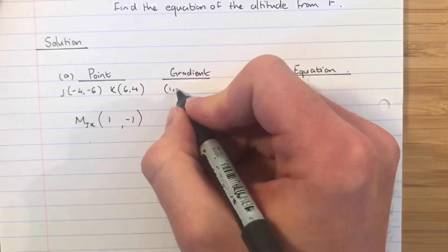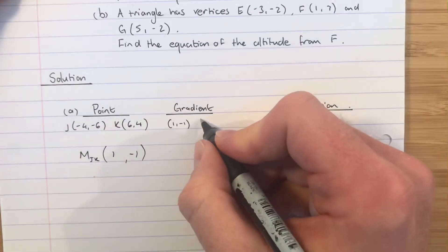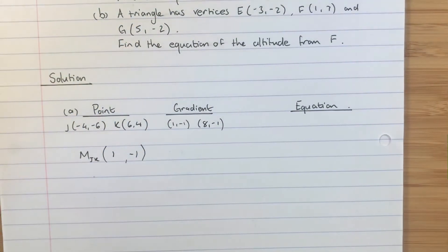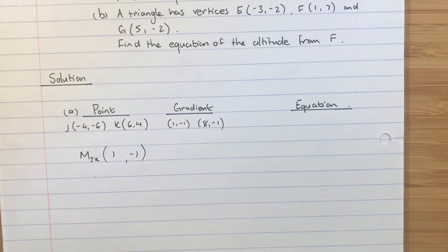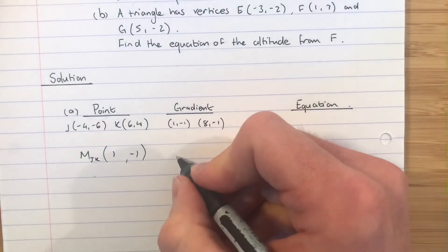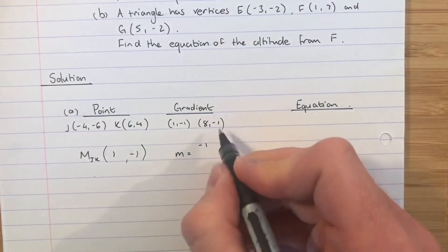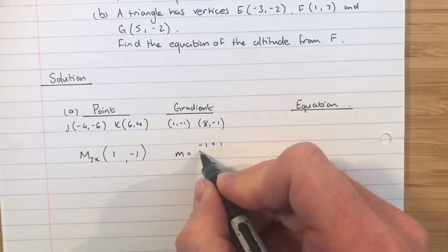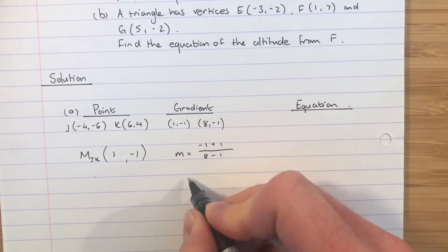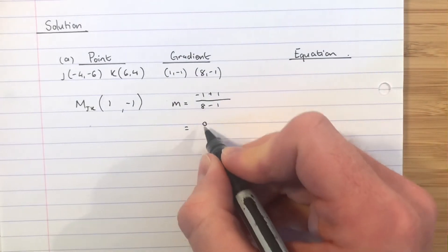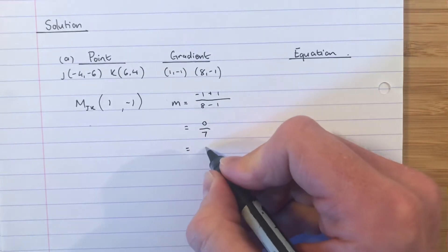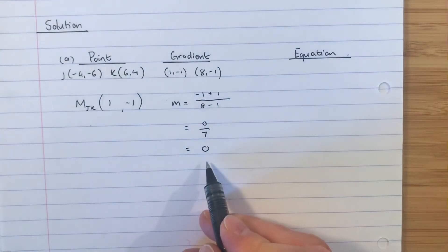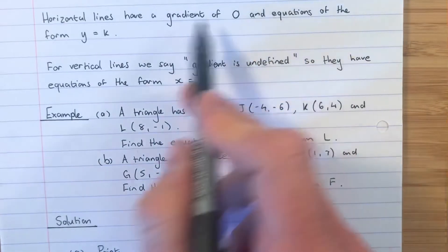We use midpoint M (1, −1) along with point L (8, −1). At this point you might spot that these two points share a y-coordinate — that should ring a bell. If they share a y-coordinate, we'll get a zero in the gradient calculation. The gradient m = (−1 − (−1)) ÷ (8 − 1) = 0 ÷ 7. Zero divided by anything simplifies to zero, so the gradient is zero.